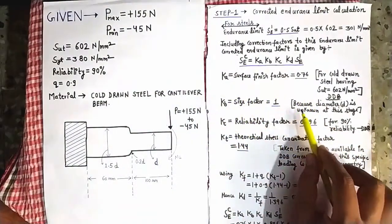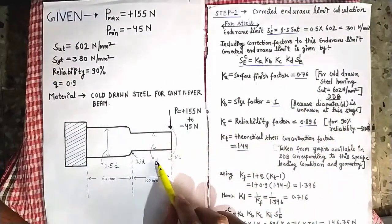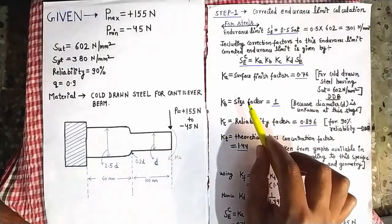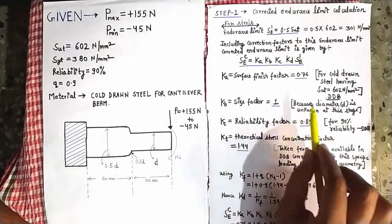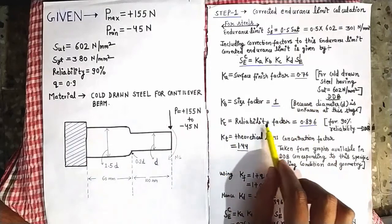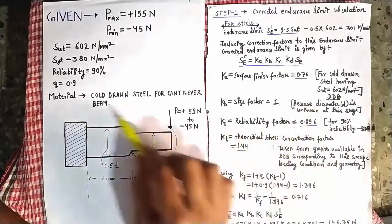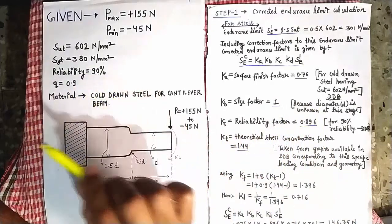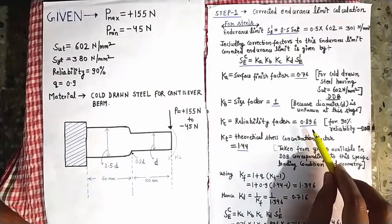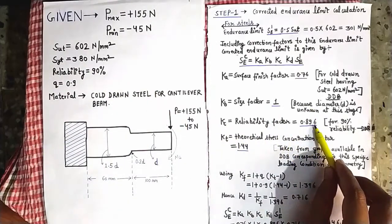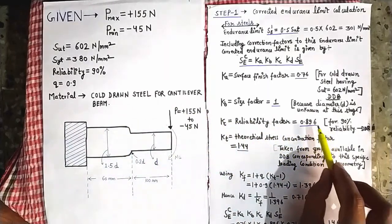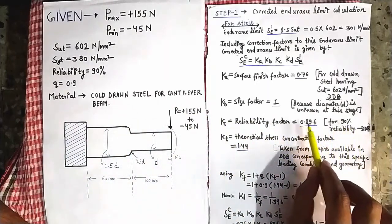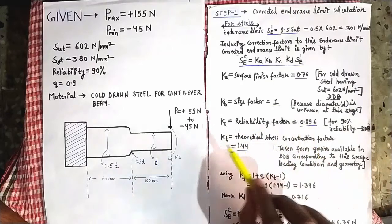KB is the size factor. Because the diameter D is not known — it is required to find diameter D in the question — we will assume KB is equal to 1. KC is the reliability factor. Corresponding to 90% reliability, the value of the reliability factor is 0.896, which you look up in your design data book.